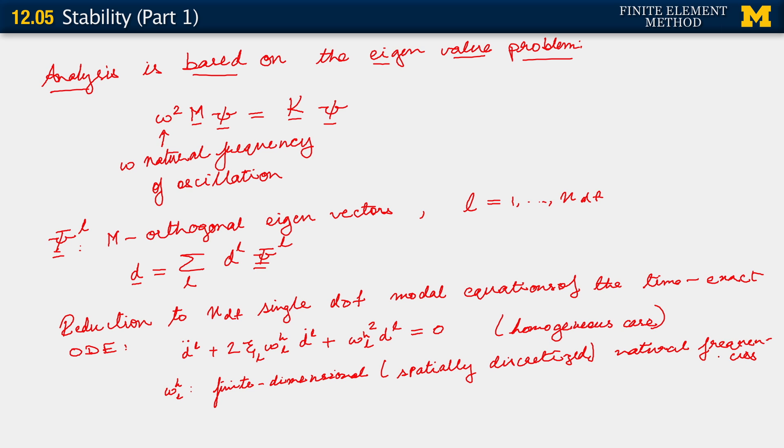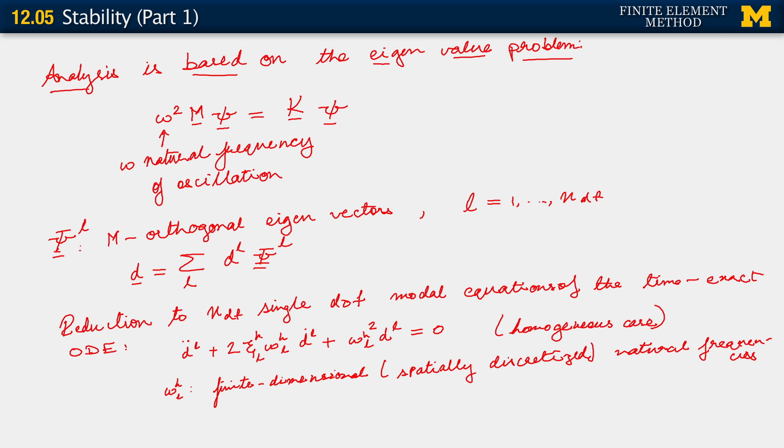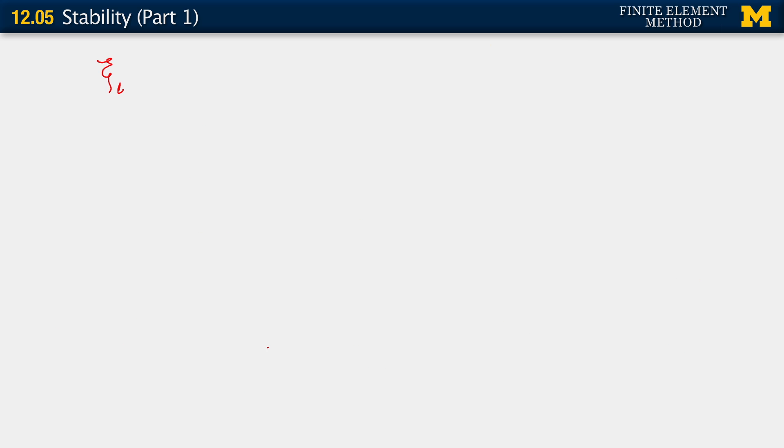These are what we will call the finite dimensional or spatially discretized natural frequencies. Just as for the parabolic problem, we considered lambda H sub L, which simply was the effect of spatial discretization upon the eigenvalues. Same thing here. That's omega H L. And for C sub L, which actually properly should better be written as a C H sub L, there's an H in that also because that also does reflect the effect of spatial discretization.